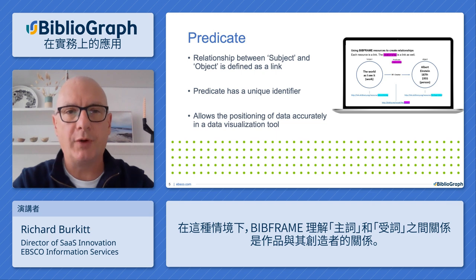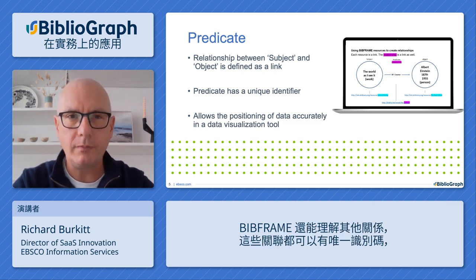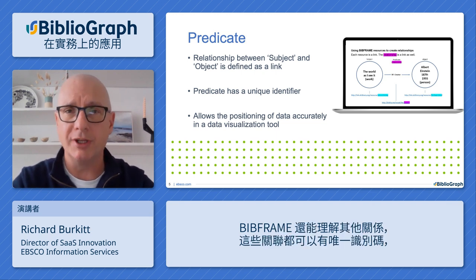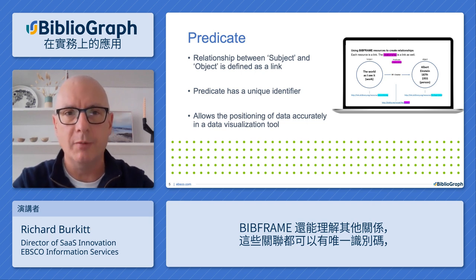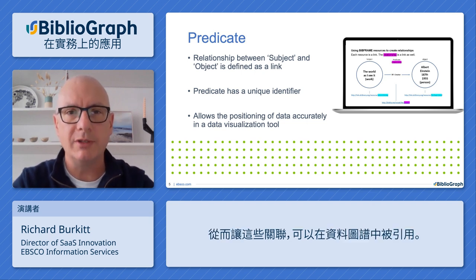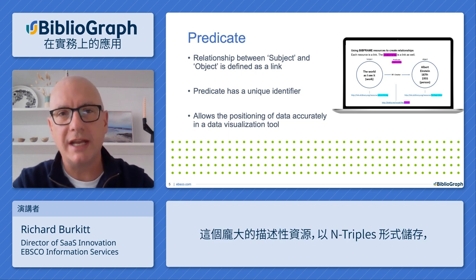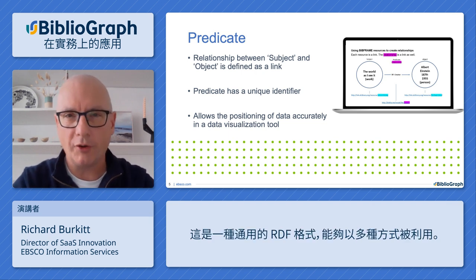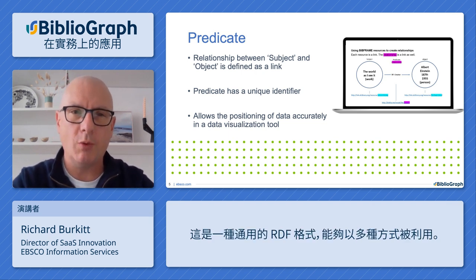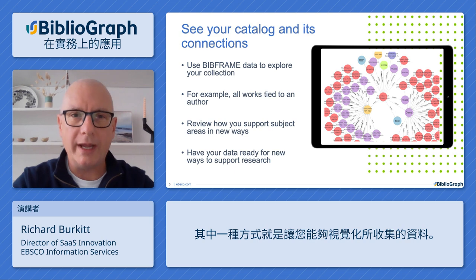Here BibFrame understands that relationship as 'creator.' There are other relationships that BibFrame understands, but they can all have a unique identifier applied to them, which enables them to be referred to within a data graph. This rich descriptive resource is stored as N-Triples, a common RDF format that can be used in many ways.